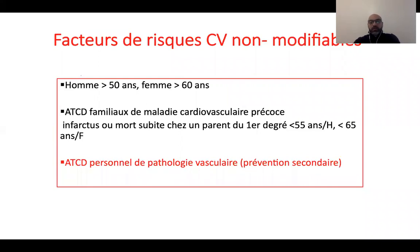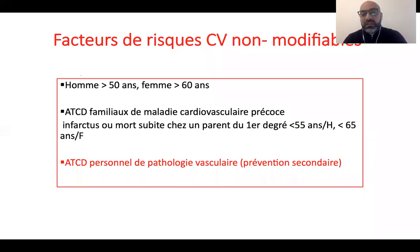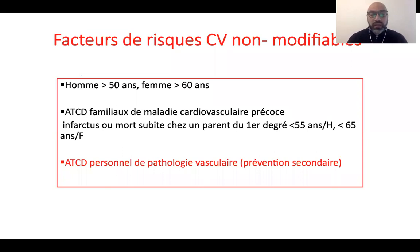Le troisième facteur de risque non modifiable, c'est l'hérédité coronaire. On ne peut pas choisir ses parents, donc on ne peut pas modifier la génétique. On parle d'hérédité cardiovasculaire lorsqu'un ascendant du premier degré de sexe masculin — un père — fait un événement cardiovasculaire avant l'âge de 55 ans, ou lorsque la mère a fait un événement cardiovasculaire — AVC ou syndrome coronaire aigu — avant l'âge de 65 ans. C'est un facteur de risque sur lequel on ne peut pas agir pour l'instant.